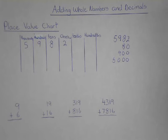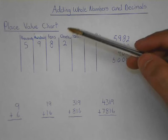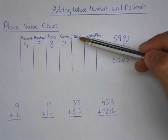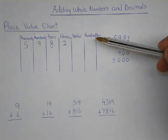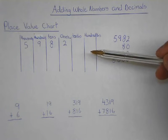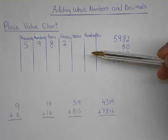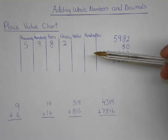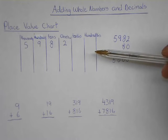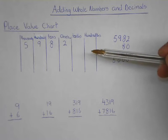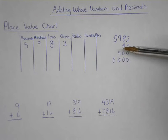Moving forward, we get two more columns: tenths and hundredths. These numbers are decimals. A decimal represents the numbers in between whole numbers. A whole number is 1 or 2, and decimals represent the numbers in between — so you'd have 1.3, 1.5, 1.68, and so on. They're not totally whole numbers; they're parts adding up to the whole, in between two whole numbers.